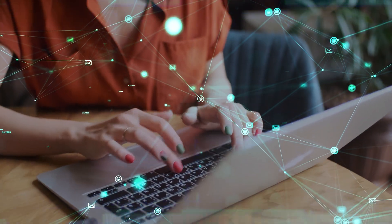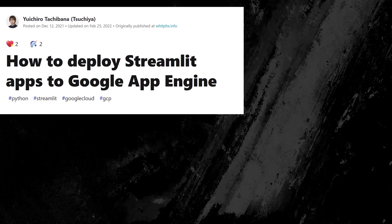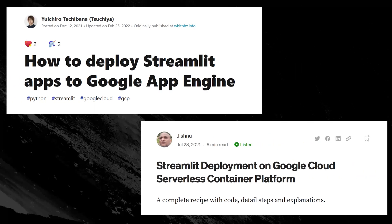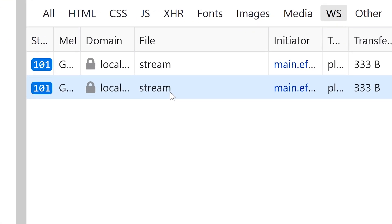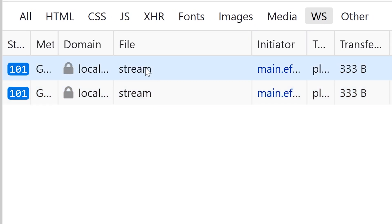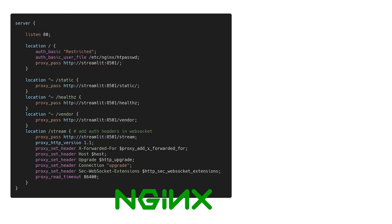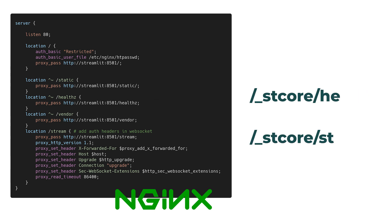For those doing Google Cloud Platform deployments on App Engine or Cloud Run, all endpoints like Health or Stream were renamed to avoid clashing. For example, Stream was renamed to STCore/Stream, and that may be blocking your future deployments.